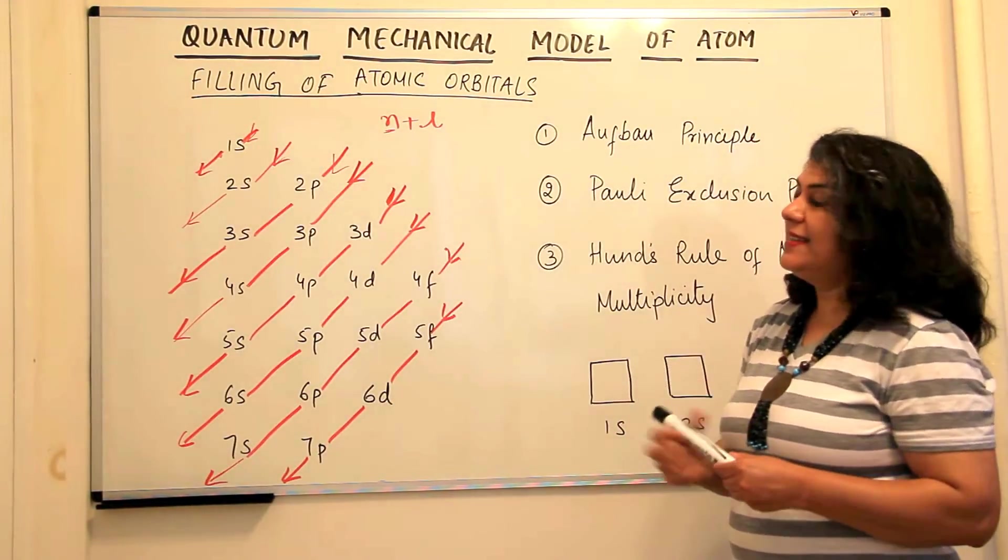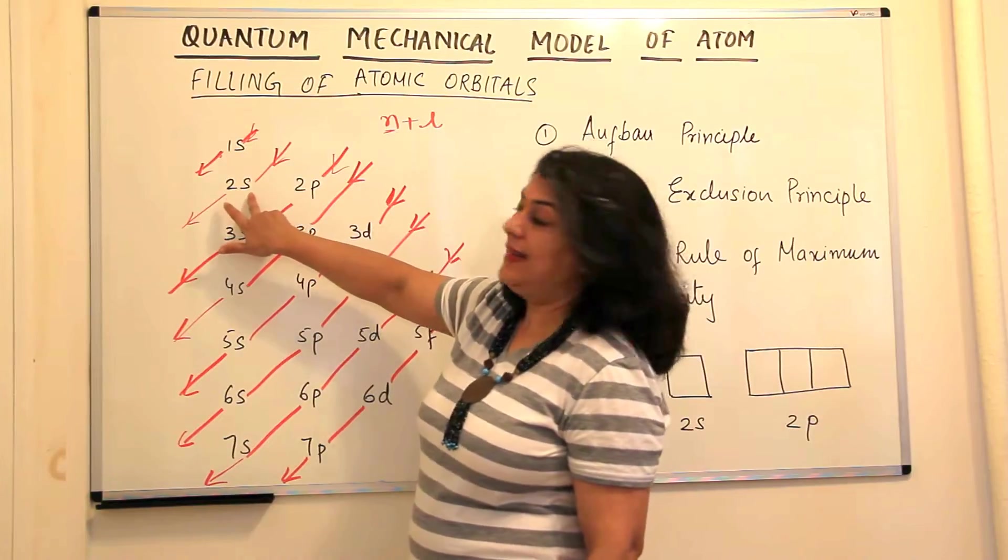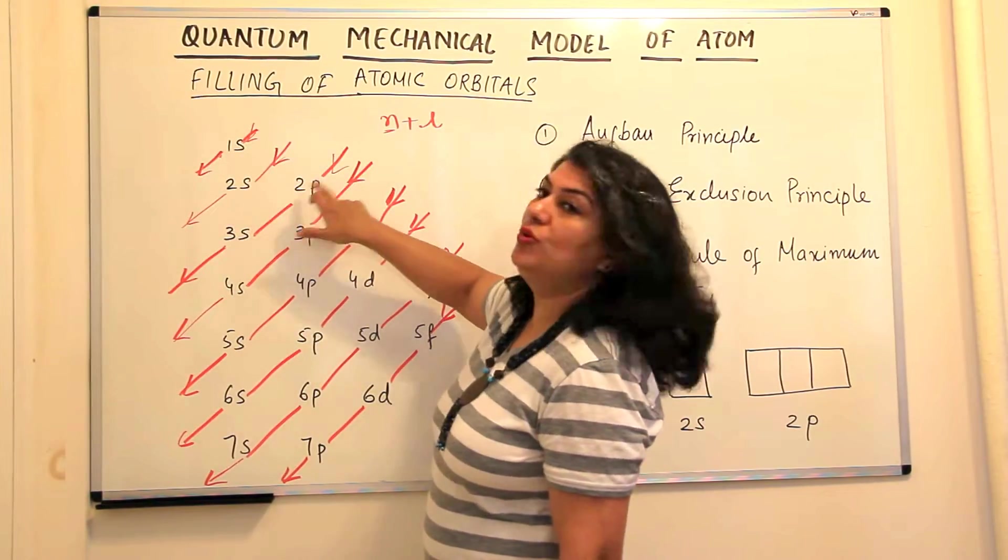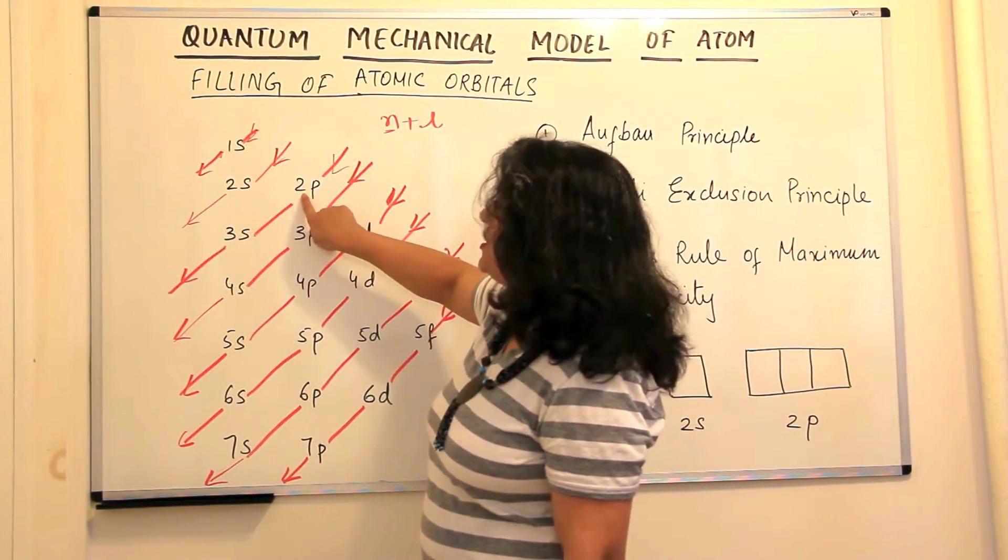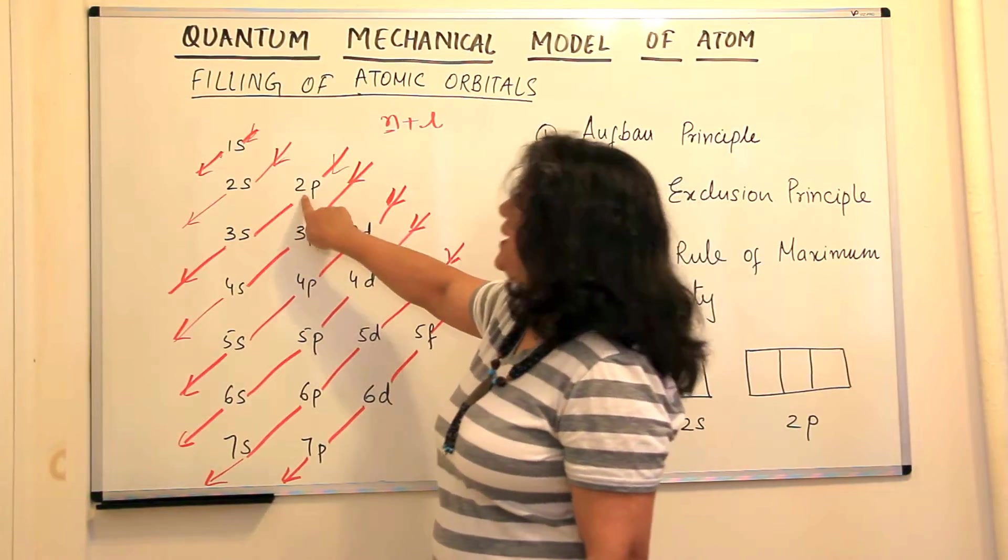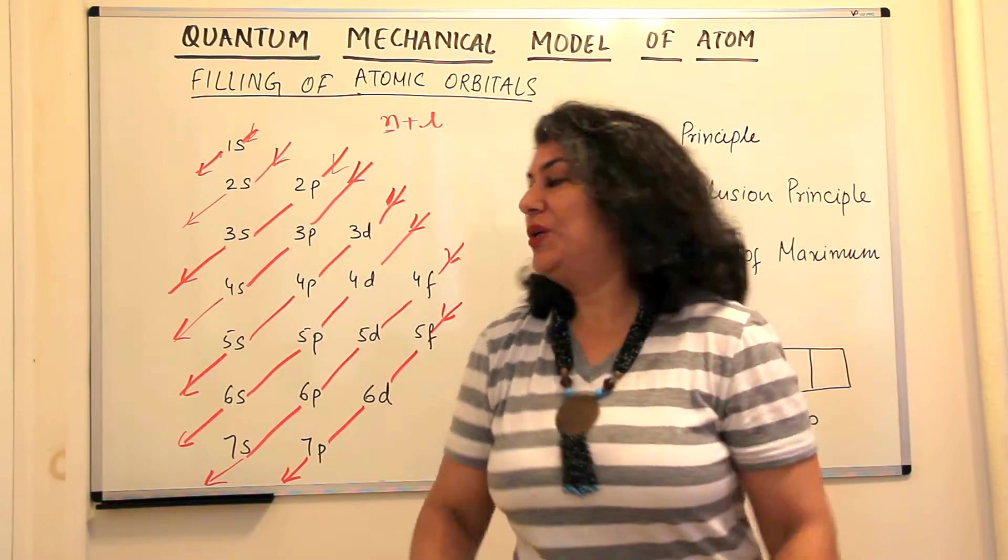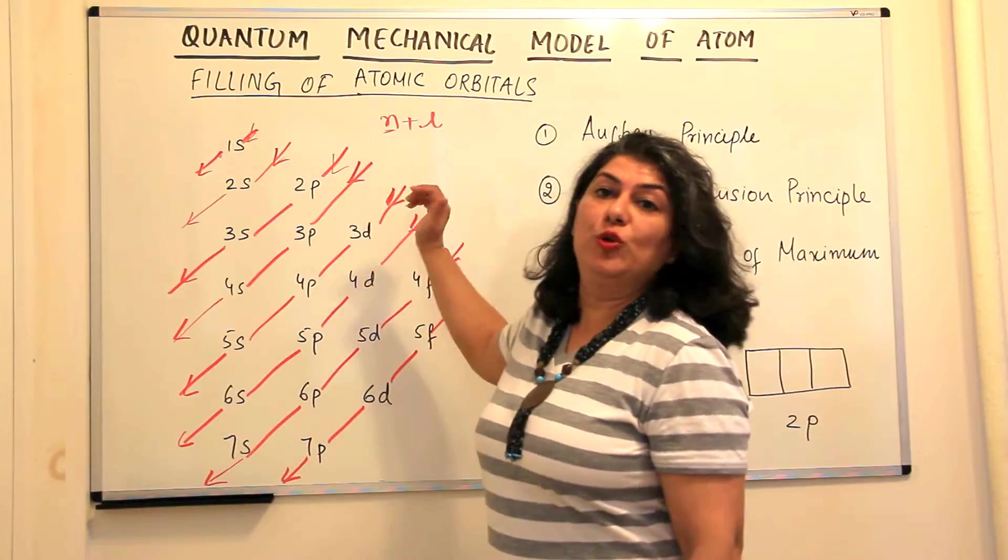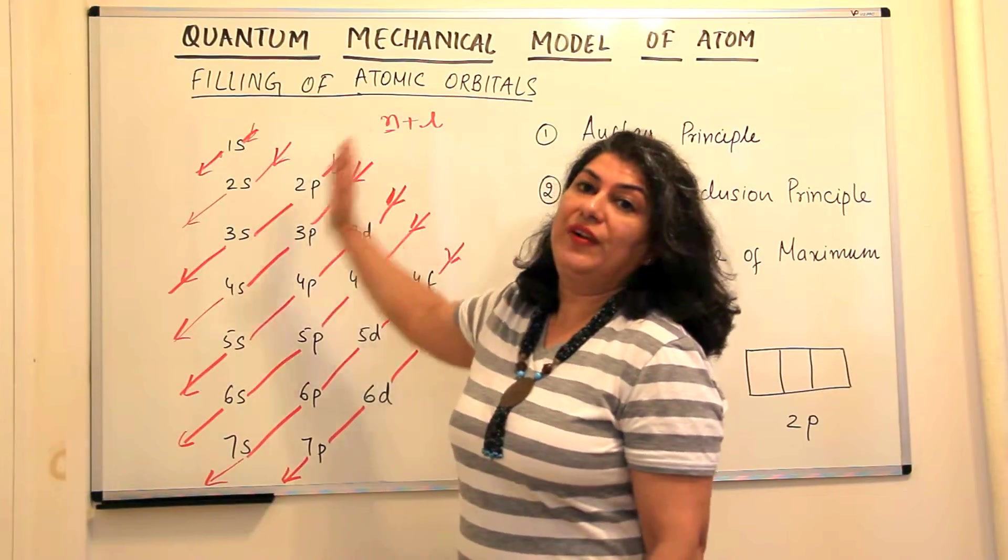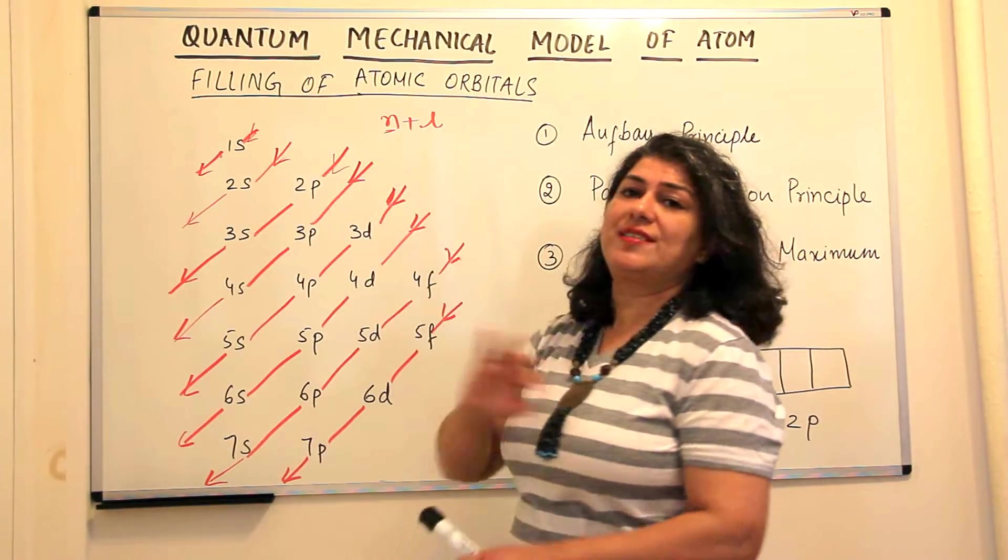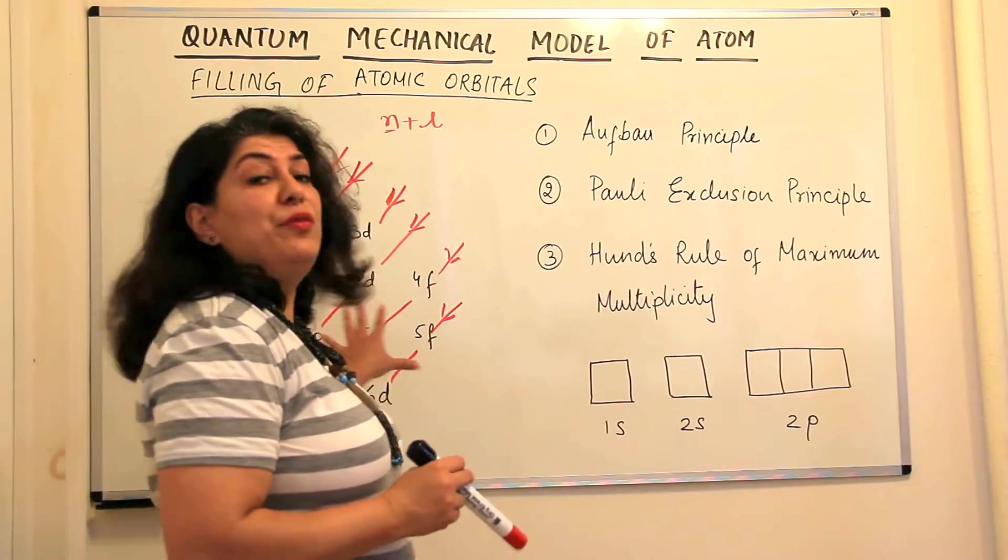So as I did in the previous video, you can see 1s, 2s is 2 and 0. The sum of n plus l is 2. For 2p, 2 and 1, sum is 3. For 3s, 3 and 0, sum is 3. But since the principal quantum number here is 2, therefore 2p has lower energy than 3s. So the logic behind it, we have already understood in the previous video. We are now understanding just this quick tool to memorize which orbitals have lower energy and what is the sequence of increasing energy. So if you learn this diagram and just sketch it out on a rough sheet or on the last sheet of your paper, you'll find it really very helpful.